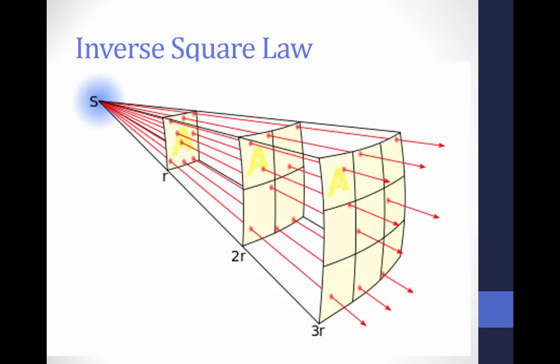This is a pictorial example of the inverse square law. S represents the light source while the R's represent measured points away from the light source, and the lines represent flux emanating from the source. The total number of flux lines depends on the strength of the source and is constant with increasing distance. A greater density of flux lines — lines per unit of area — means a stronger field. The density of flux lines is inversely proportional to the square of the distance from the source because the surface area of a sphere increases with the square of the radius.